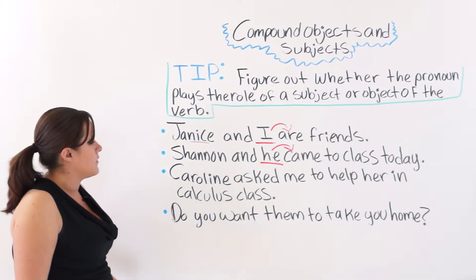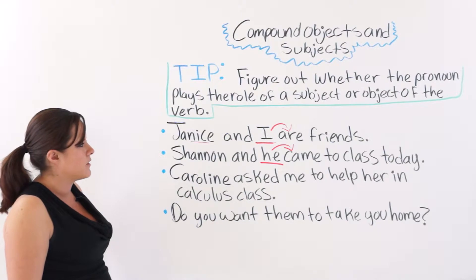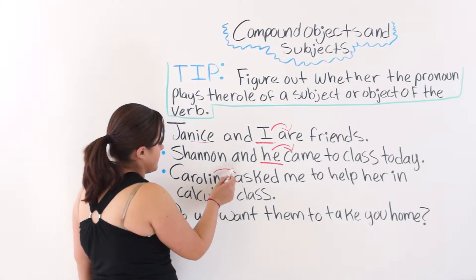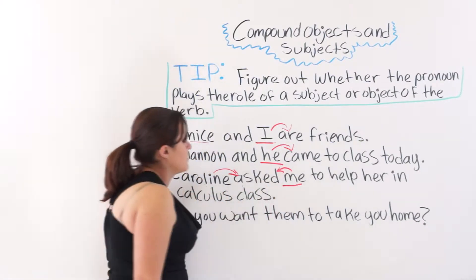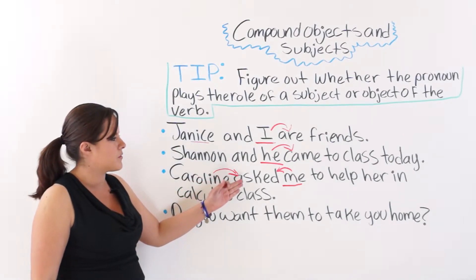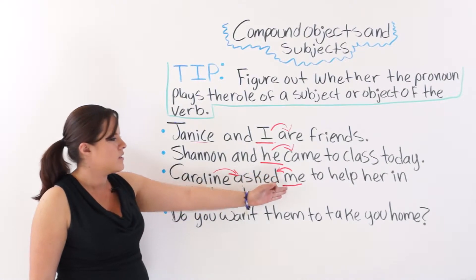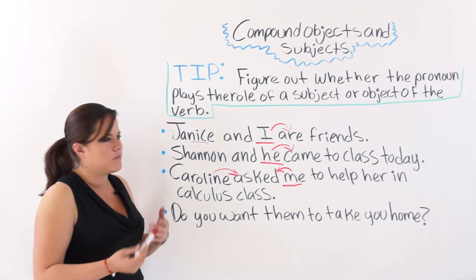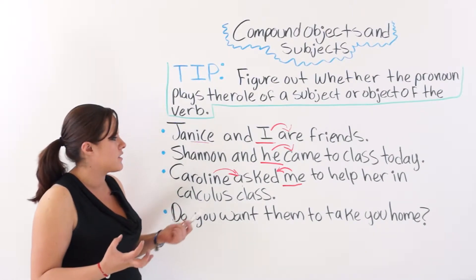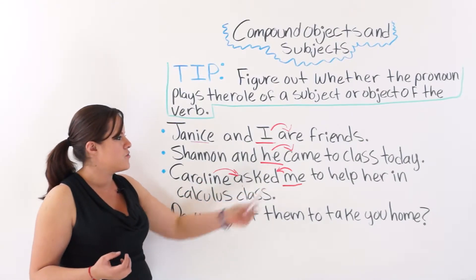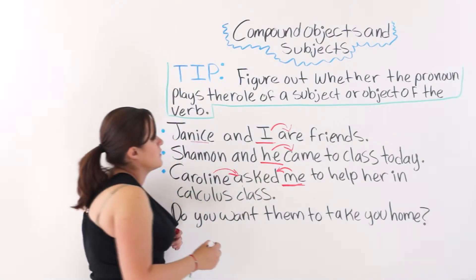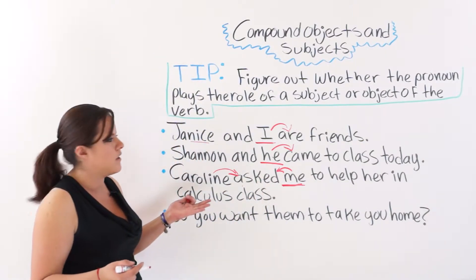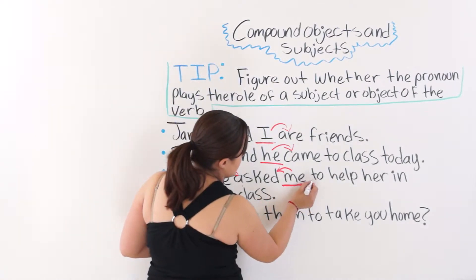The next one is 'Caroline asked me to help her in calculus class.' Caroline is the subject of this verb, and 'me' is the object of the verb. Remember: the subject is the one performing the action, and the object is the one being changed or affected by the action. So 'me' is the object of the sentence — a compound object — and therefore we must use an object pronoun.